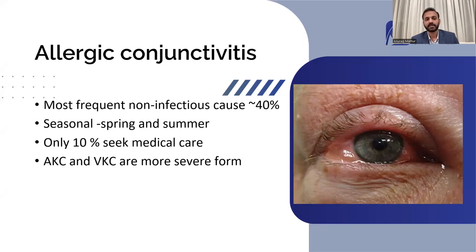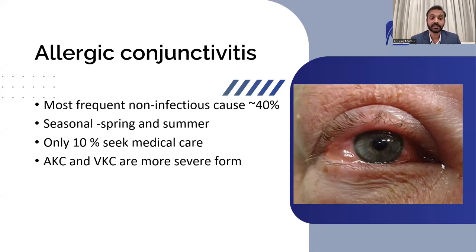There are various types of allergic conjunctivitis. The most common type is seasonal conjunctivitis, which becomes apparent only during particular seasons. But there are some very severe forms, like atopic and vernal keratoconjunctivitis. They are a huge topic in themselves to be discussed separately, but we will touch upon what they can do.